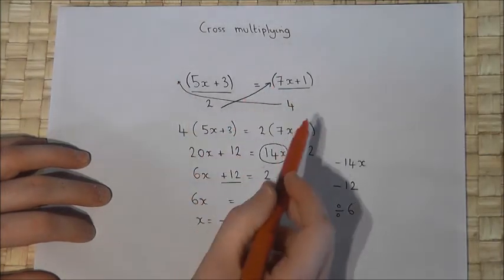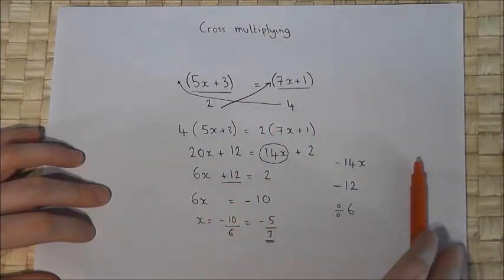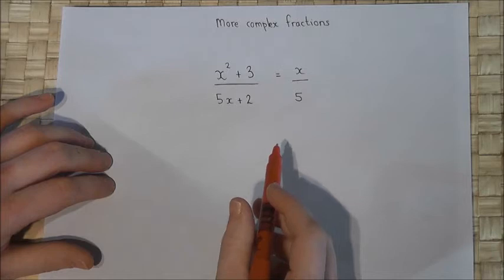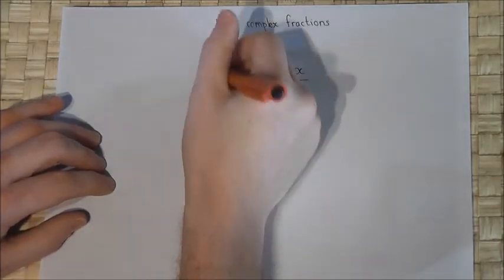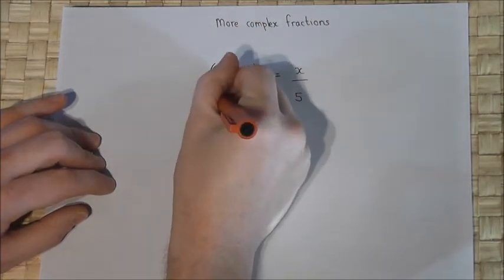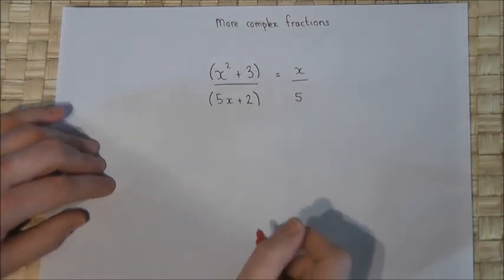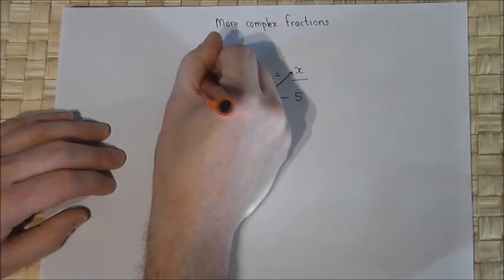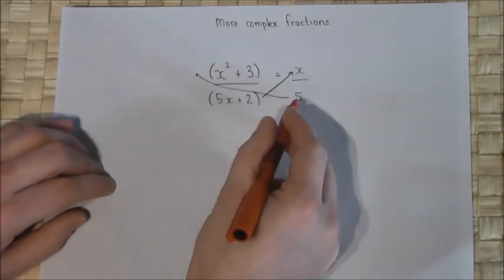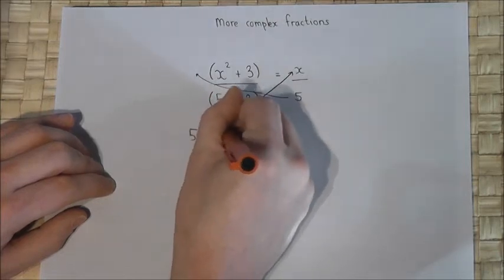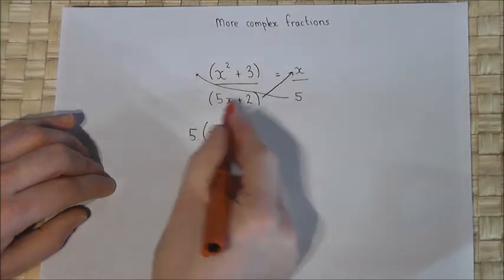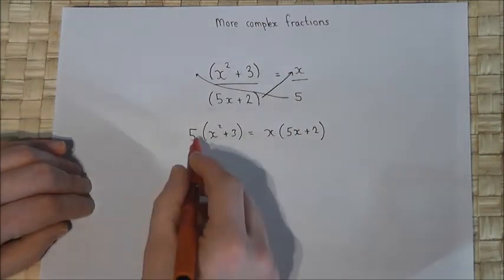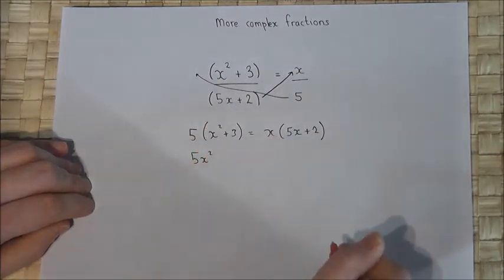We can use cross multiplying when there are two fractions, and apply this method to more complex-looking equations. I put brackets around the terms on the numerators, and also around the denominators. With two fractions, I can multiply up by (5x + 2) and by 5 using cross multiplication, giving 5 lots of one bracket equal to x times the other bracket. Then I expand: 5 times x squared is 5x squared, 5 times 3 is 15.